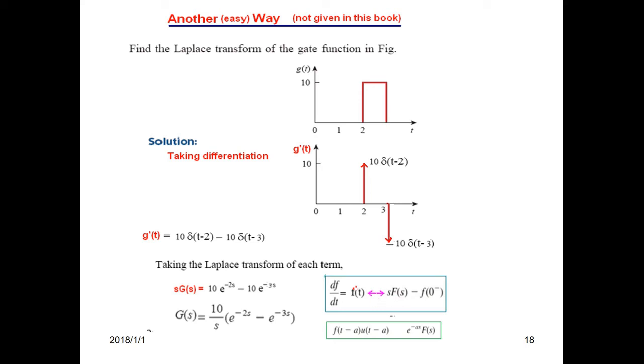is sF(s), so g'(t) Laplace transform will be sG(s). Similarly, for the shifted delta, by the formula, it will be e^(-as)F(s). Since F(s) for delta is 1, it is only e^(-2s), and in this case it will be e^(-3s).